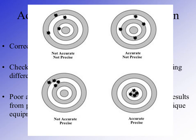Looking at four target diagrams: in the first, the holes are scattered and not centered on the bullseye — neither accurate nor precise. In the upper right, the holes are scattered but on average surround the bullseye, so they are accurate but not precise. In the lower left, the holes are tightly packed together indicating precision, but consistently off the bullseye — precise but not accurate. In the lower right, the holes are both tightly packed and centered on the bullseye — an example of being both accurate and precise.